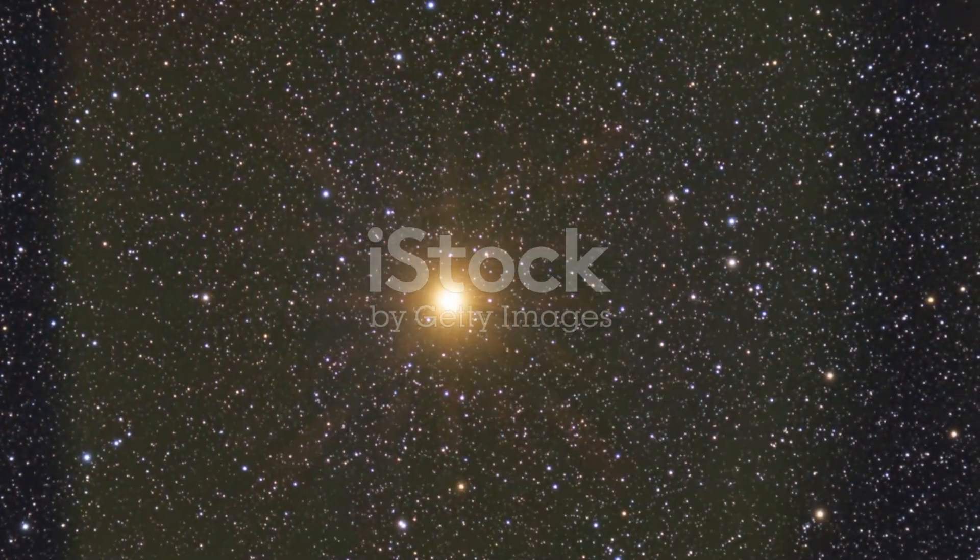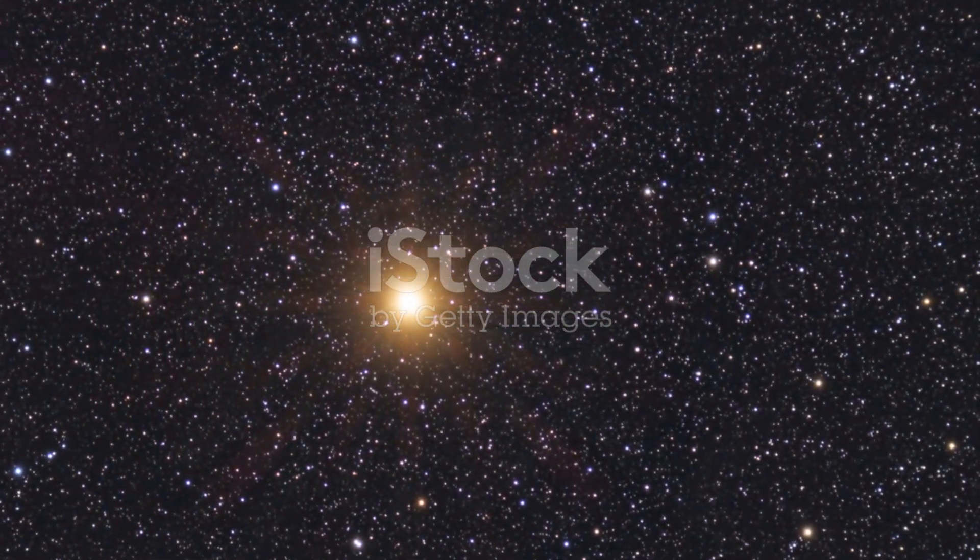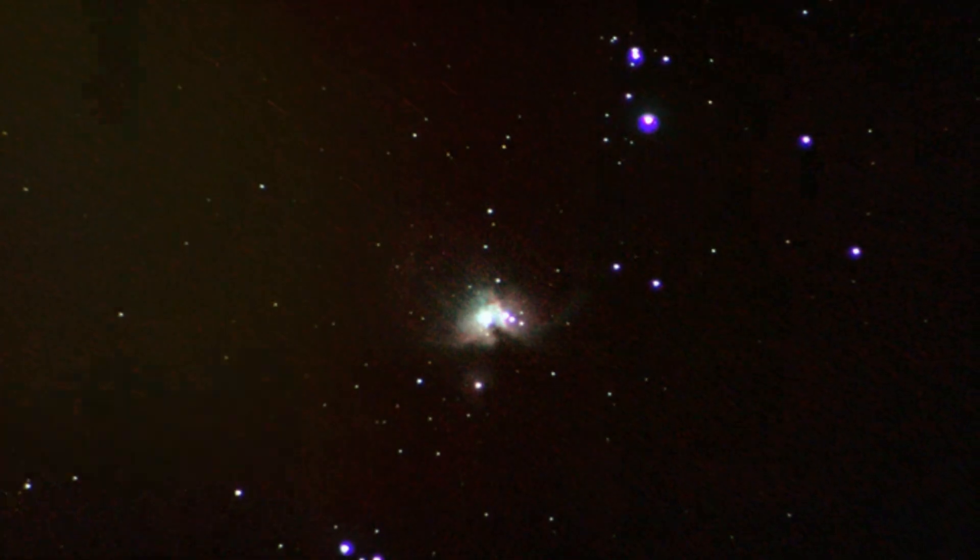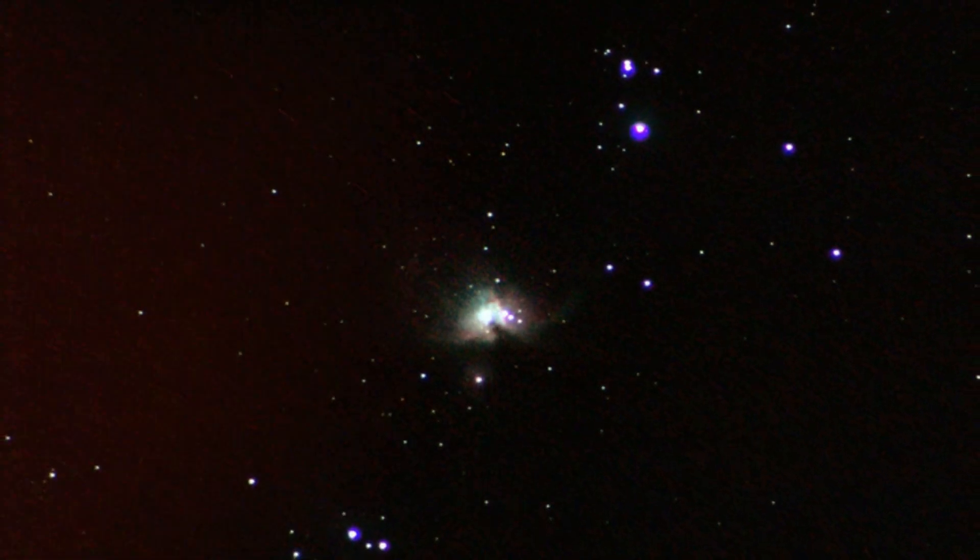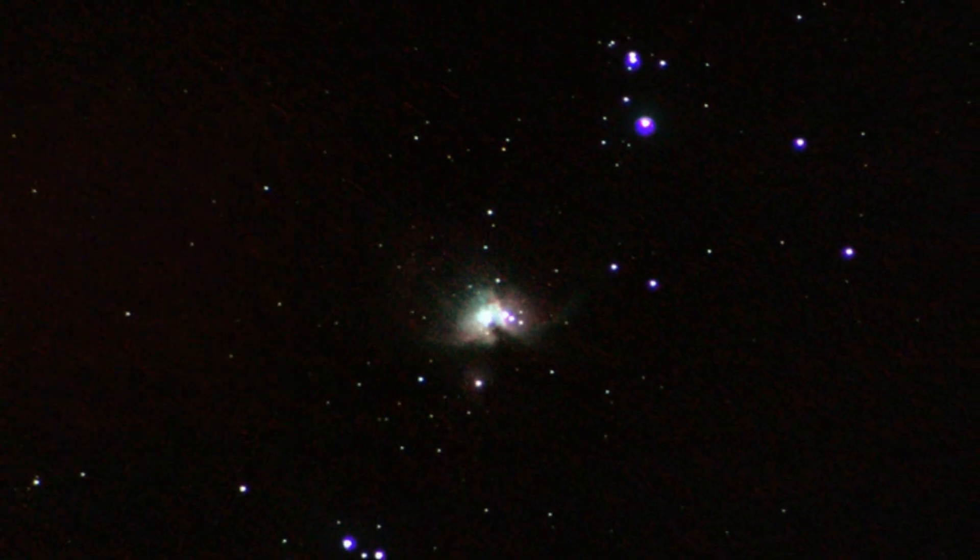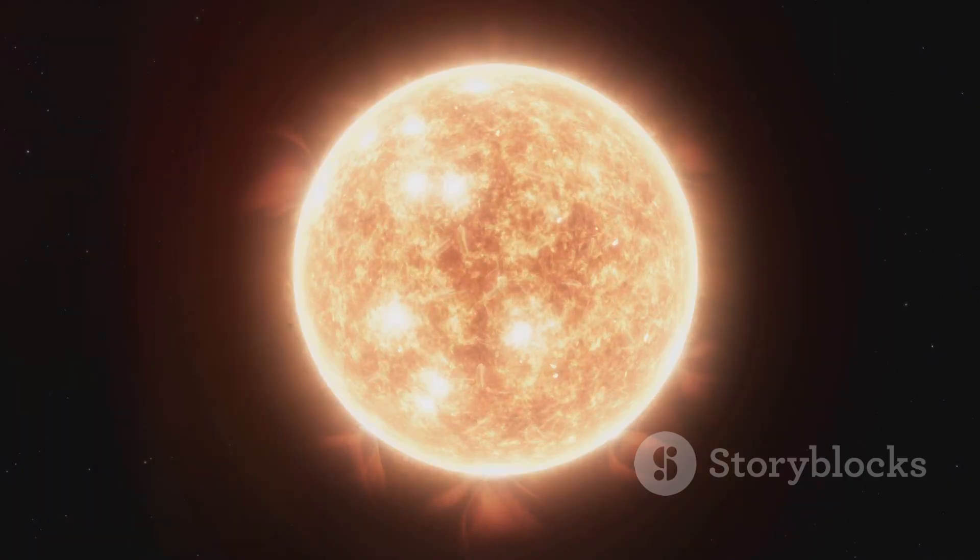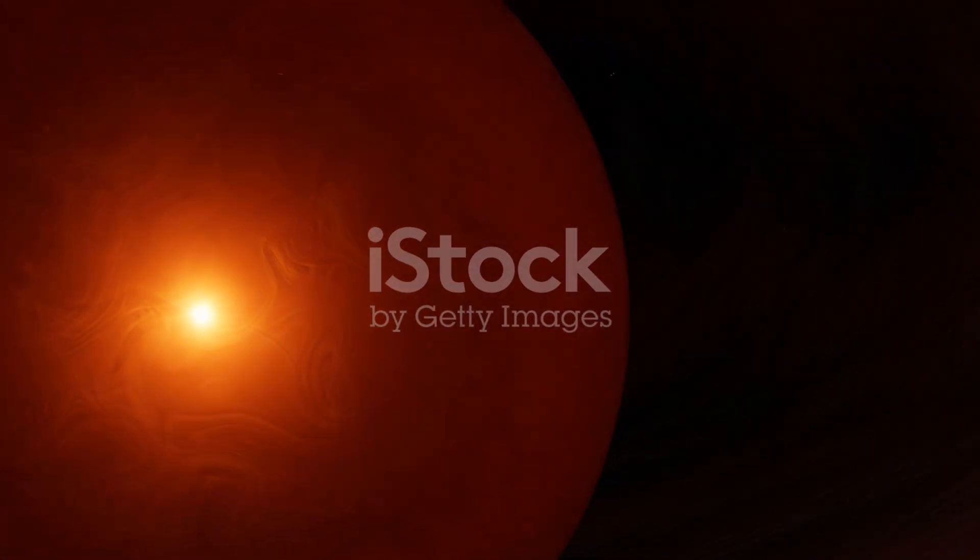Betelgeuse, a red supergiant star located in the constellation Orion, has been the subject of countless studies and speculations. It's one of the largest stars visible to the naked eye and is around 700 times larger than our sun. But what makes Betelgeuse so fascinating?